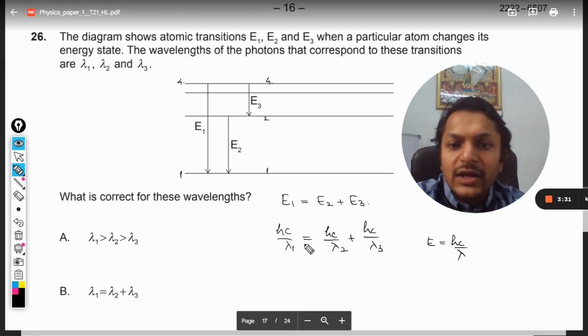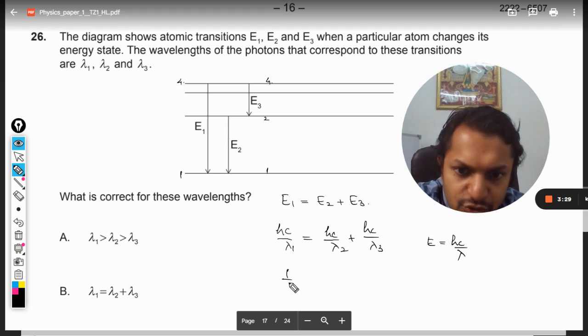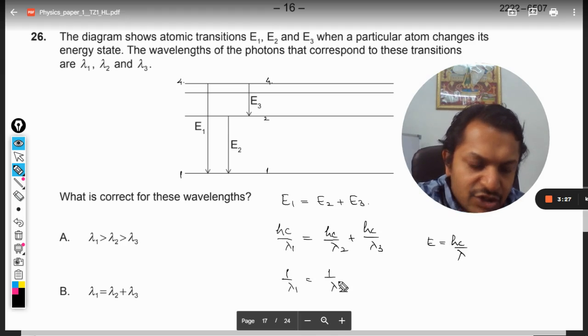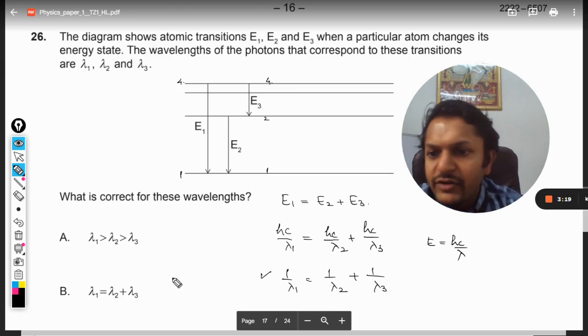Now taking hC common, so I reach this conclusion that 1 by lambda 1 should be equal to 1 by lambda 2 plus 1 divided by lambda 3. So this should be our correct answer.